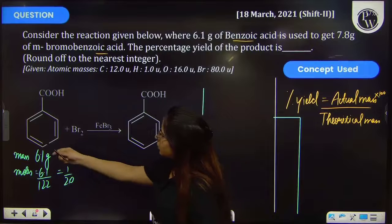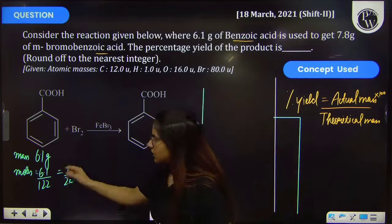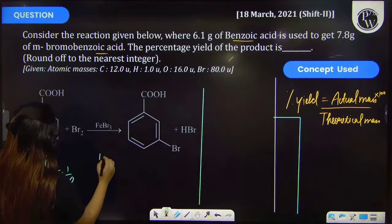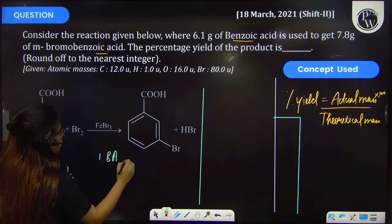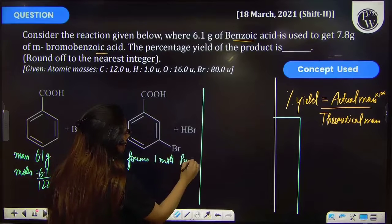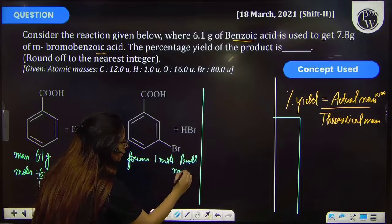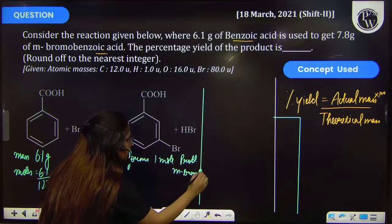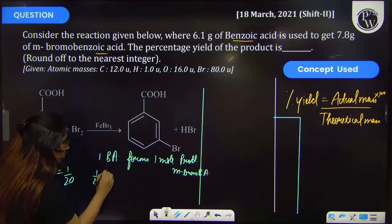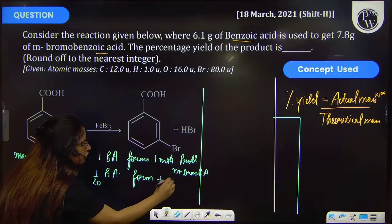If we look at this reaction, we will get 1 mole used to form 1 mole of this product. One mole of benzoic acid forms one mole of product, that is metabromo benzoic acid. So 1 by 20 moles of benzoic acid will form 1 by 20 moles of product.